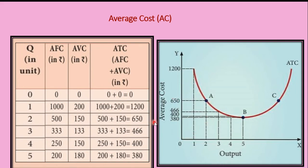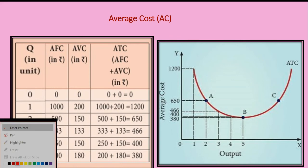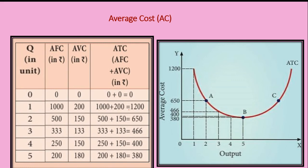Now with the help of the table we can plot the graph with output on the x-axis and average cost on the y-axis. For one unit the average cost is 1200, for two units it is 650, for three units it is 466, for four units it is 400, and for five units it is 380. Joining all these points gives the ATC curve.